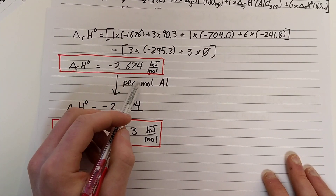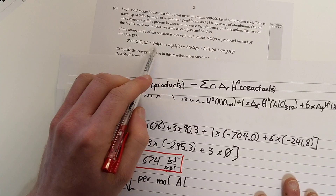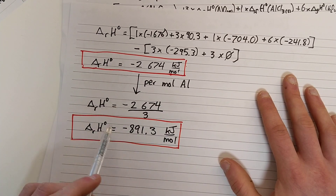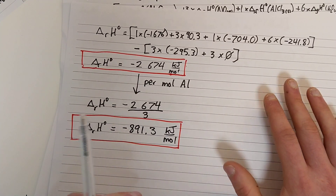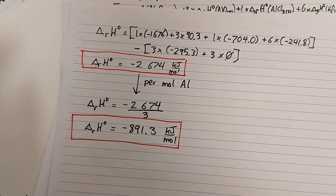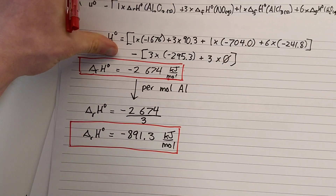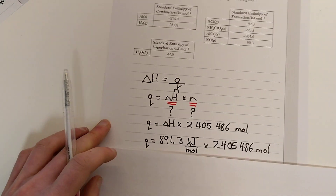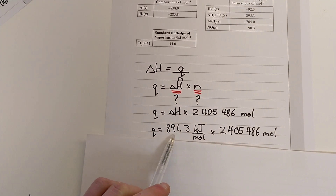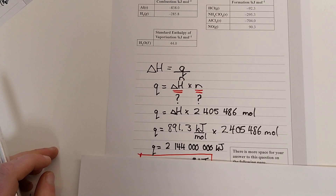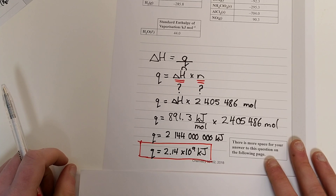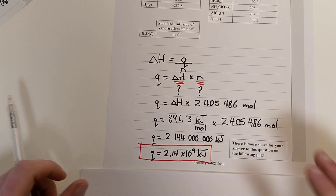We're nearly done — that was a lot of work. The last step is to take that enthalpy change value and plug it back into our equation to find the energy released, Q. I've got that value of ΔH plugged in, multiplied by the moles of our limiting reagent, and there is our final answer to three significant figures in scientific notation. Thanks very much, see you next time.